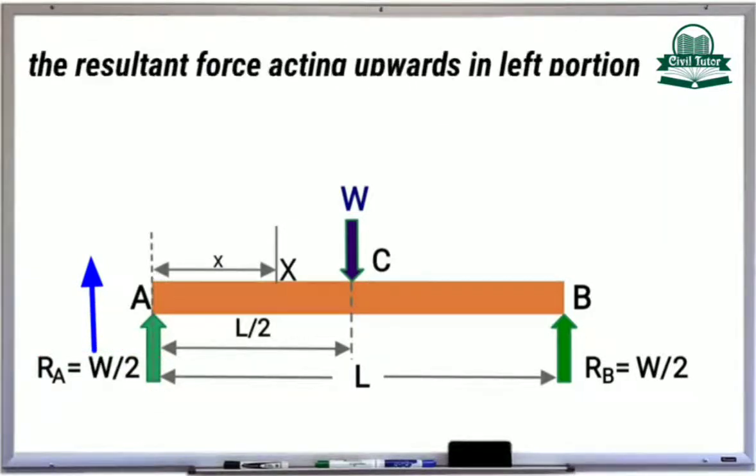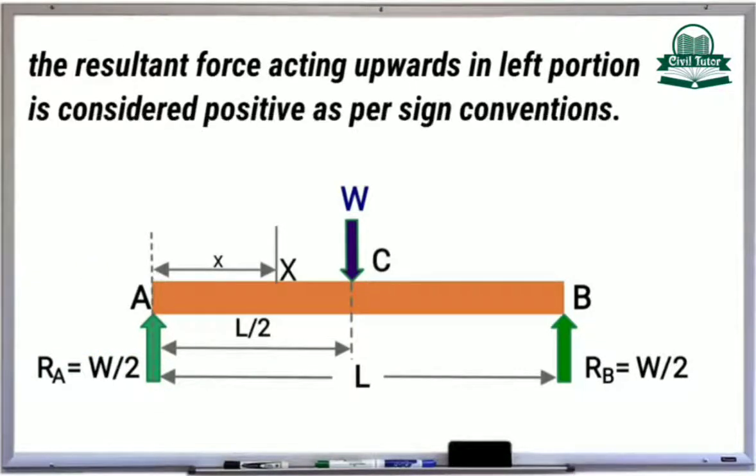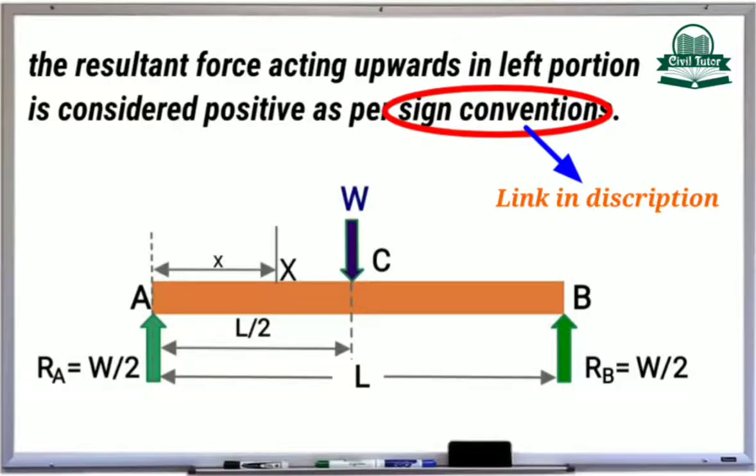And we already know the resultant force acting upwards in the left portion of a section is considered positive as per the sign conventions of shear force, which I have already mentioned in my previous tutorials. You can go through it by visiting the link given in the description.